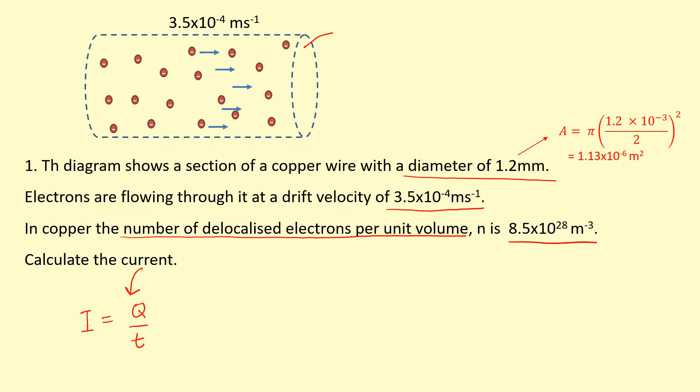Let's figure out the volume, and then we can multiply it by this number here, which will tell me how many electrons there are inside that volume. To get the volume, I need the cross-section area, which is 1.13 times 10 to the minus 6, and I need to multiply that by the length. So, the problem is, I don't have the length. However, in problems like this, what's useful is to just let time equal 1 second.